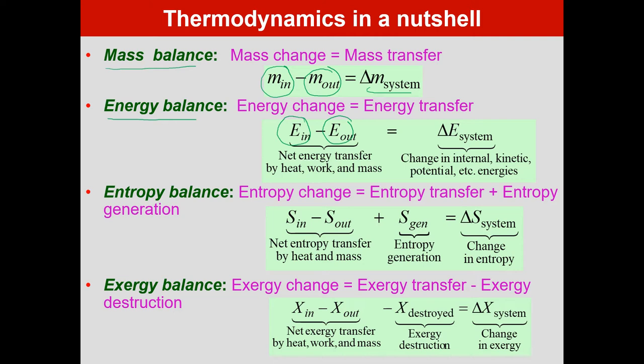The net energy transfer will be equal to the sum of the change in internal energy, kinetic energy, and potential energy. The energy input can be from heat, from work, or from mass. So basically we need to account for the energy input by heat, energy input by work, energy input by mass, minus the energy output by heat, work, and mass. This difference will give us the total change in energy of the system.